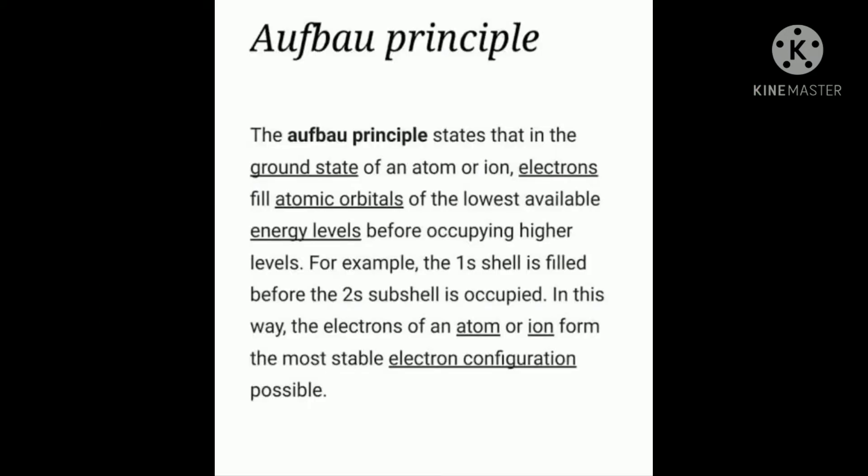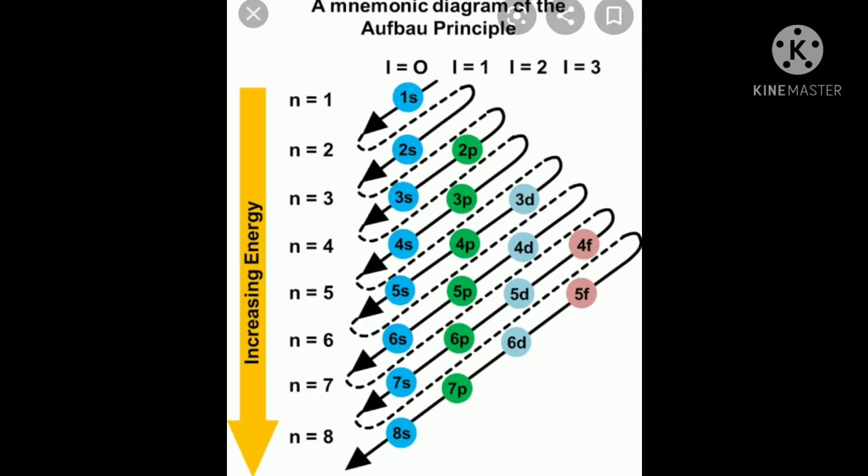The Aufbau principle: the word 'Aufbau' in German means 'building up,' so the rule is also known as the building up rule. The building up of orbitals means the filling up of orbitals with electrons. The principle states that in the ground state of an atom, the orbitals are filled in order of their increasing energies.